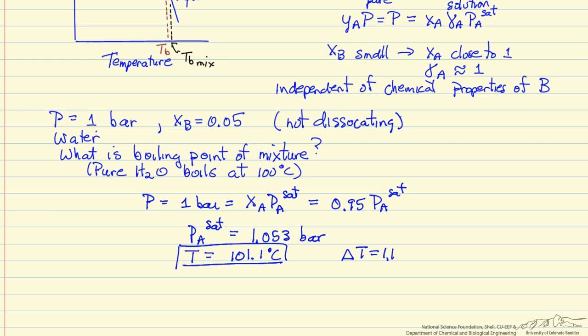So delta T is only 1.1 degrees Celsius for 5 mole percent of a non-volatile solid added to water. There are other ways to do this calculation we'll look at in separate screencasts.